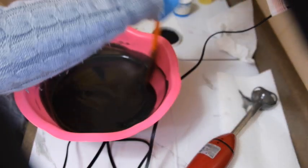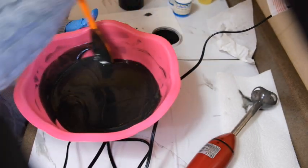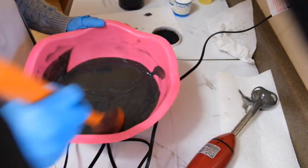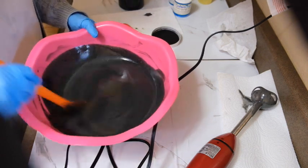I'm also using the spoon instead of the stick blender because when you stick blend it, it comes to a trace faster. And so this seems to be a very thick batter already, so I don't want it to get any thicker.